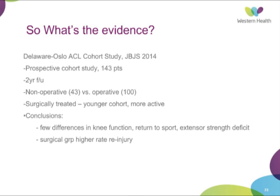Given all of this, what's the current evidence? The most recent study published in JBJS in January of this year was the Delaware-Oslo ACL cohort study — still relatively small, looking at 143 patients. It was a prospective cohort study, level two evidence with a two-year follow-up, comparing a non-operative versus an operative group, though the groups weren't even — the operative group was double the size. Those surgically treated were a younger cohort and more active. They concluded there were few differences between the two groups in terms of knee function, return to sport, and extension strength. However, the surgical group did have a higher rate of re-injury, likely because they tend to be younger, play more level-one sport, and return to sport sooner.